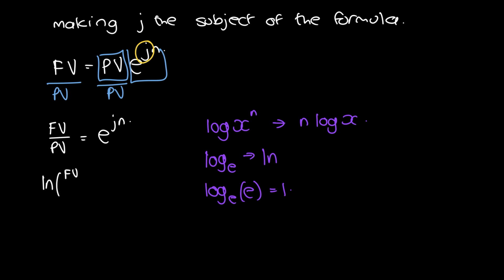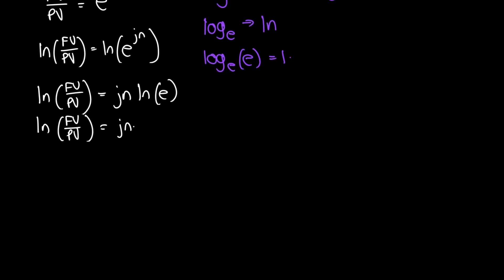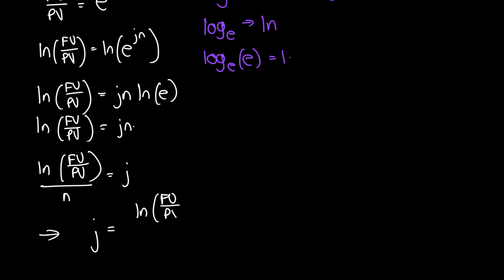Now we take the natural log of both sides: ln(FV/PV) equals ln(e^(jn)). We bring jn to the front: ln(FV/PV) equals jn·ln(e). Since ln(e) equals 1, this simplifies to ln(FV/PV) equals jn. Dividing both sides by n gives us j equals ln(FV/PV) divided by n — the nominal interest rate in decimal fraction notation.